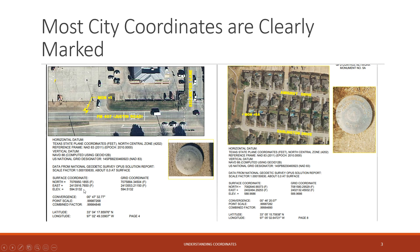They have surface coordinates and grid coordinates — a surveying term, but for purposes of this presentation, just know that they are very similar. Essentially, the northern, eastern, and elevation coordinates show where the city control points are in real-world coordinate terms. You can see they have a northern, eastern, and elevation value, as well as a latitude and longitude value.